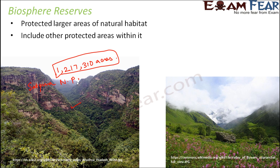The Panchmari biosphere reserve also includes Bori Wildlife Sanctuary. So Satpura National Park, Bori Wildlife Sanctuary, and Panchmari itself are all included inside the Panchmari biosphere reserve. Another example of a biosphere reserve is in Uttaranchal — that is the Nanda Devi biosphere reserve. These are huge stretches of land inside which you have multiple national parks or sanctuaries, and even some small areas inhabited by tribal people.